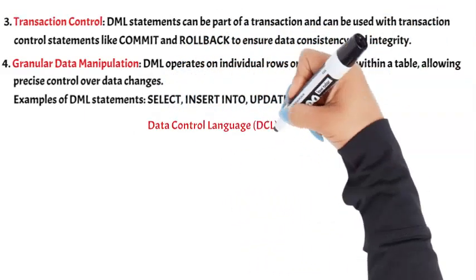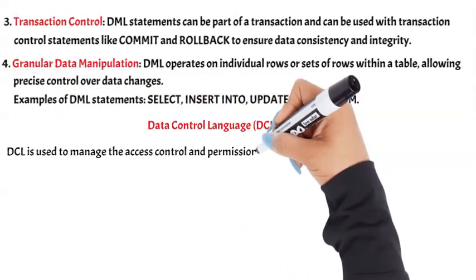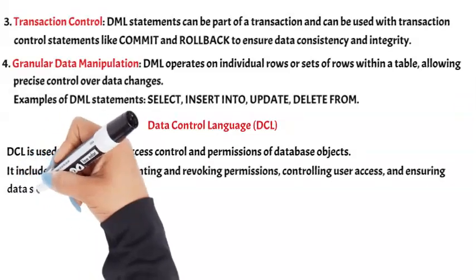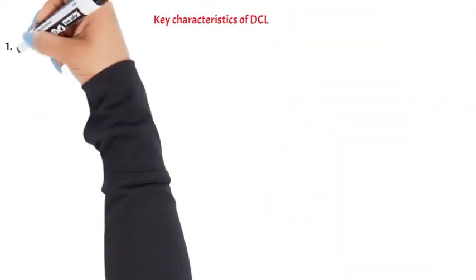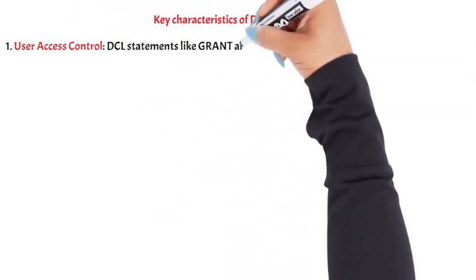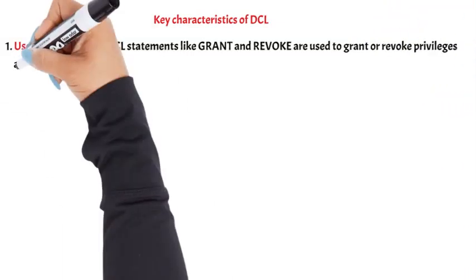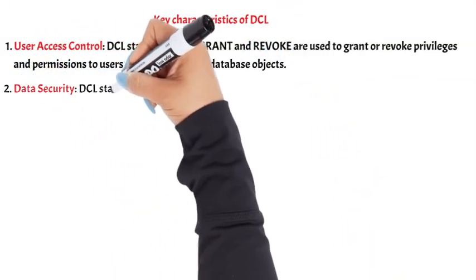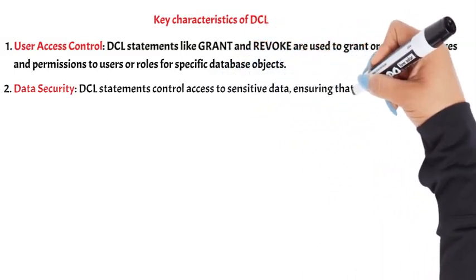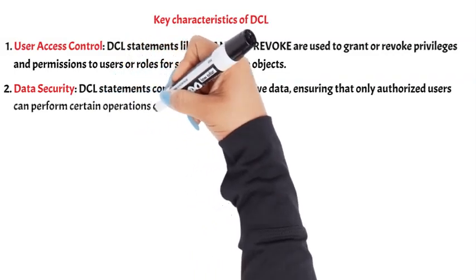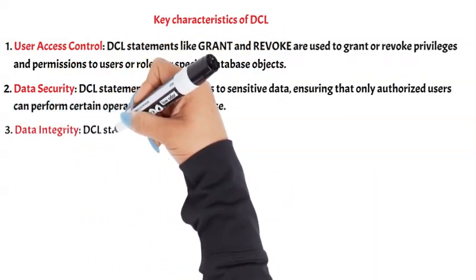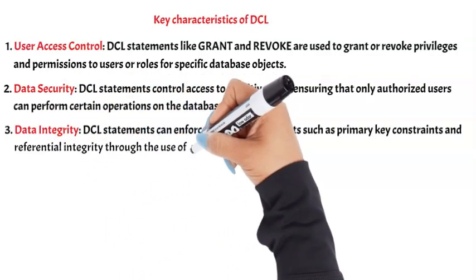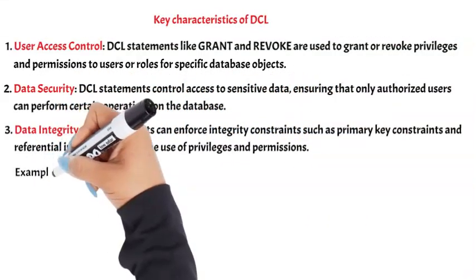Data Control Language (DCL) is used to manage the access control and permissions of database objects. It includes statements for granting and revoking permissions, controlling user access, and ensuring data security. Key characteristics of DCL: 1. User access control — DCL statements like GRANT and REVOKE are used to grant or revoke privileges and permissions to users or roles for specific database objects. 2. Data security — DCL statements control access to sensitive data, ensuring that only authorized users can perform certain operations on the database. 3. Data integrity — DCL statements can enforce integrity constraints such as primary key constraints and referential integrity through the use of privileges and permissions. Examples of DCL statements: GRANT, REVOKE.